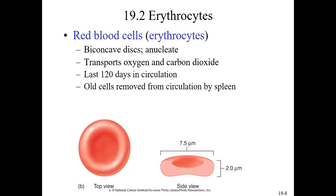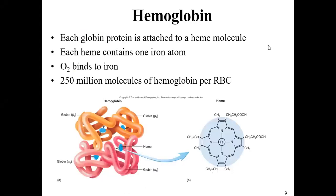In the part one lecture for chapter 19, we looked at red blood cells or erythrocytes. Inside red blood cells, you'll find a protein called hemoglobin. It is a quaternary structure protein, meaning it has four subunits for this one molecule — four different subunits attached together.